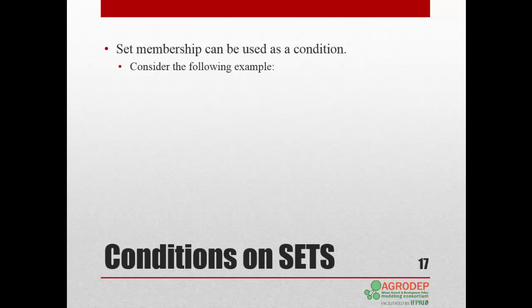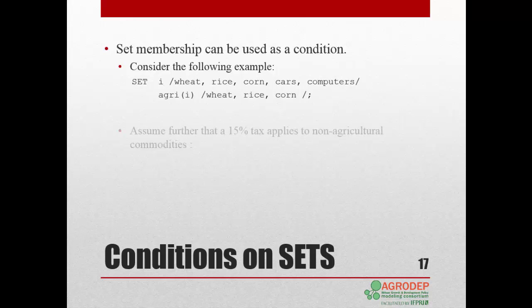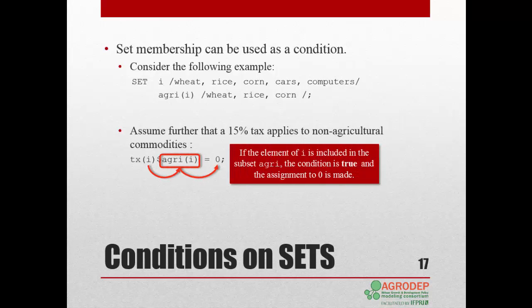It is also possible to use a dollar condition on sets when an action is taken on only selected elements of that set. For example, we define the set I and a subset of I called Agri. We want to apply a 15% tax only on non-agricultural commodities. In this expression, if the element of I is included in the subset Agri, the condition is true and the assignment is executed — Tx equals 0. So for wheat, rice, and corn, the condition is true and the tax will be 0.